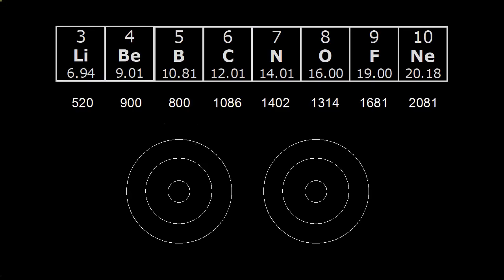In this video, let's look at the periodic trends for ionization energy. For this period, as we go across from lithium all the way over to neon — going this way across our periodic table — we can see that in general there's an increase in the ionization energy.